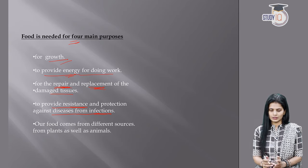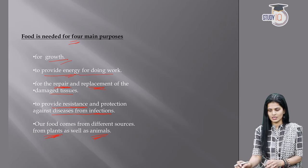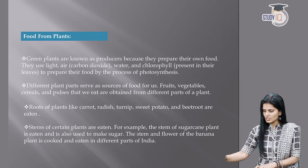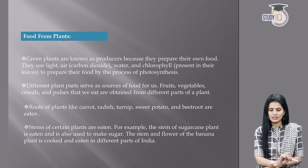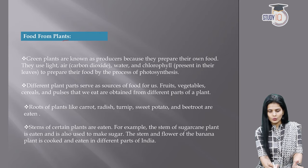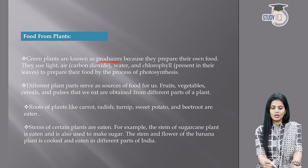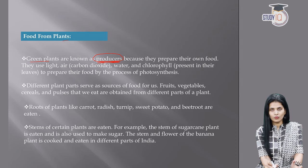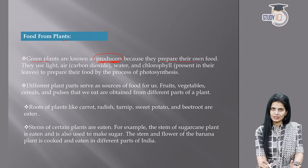Our food comes from different sources — both plant sources and animal sources. The food we get from plant sources: green plants are known as producers. Animals are not called producers; only green plants are called producers. Why? Because they prepare their own food. They make their own food as well as food for us. Most of our food — and the food of other animals — ultimately comes from plants.